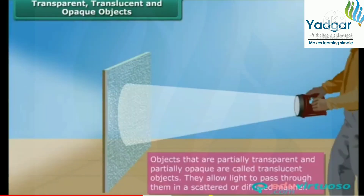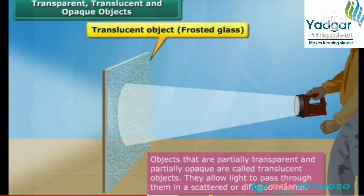Objects that are partially transparent and partially opaque are called translucent objects. They allow light to pass through them in a scattered or diffused manner. Frosted glass, tracing paper, greased paper, etc. are examples of translucent objects.